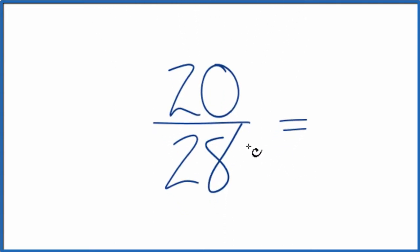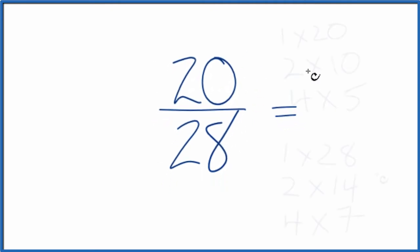To do that, we need to find a common factor, something that goes into 20 and 28. We want to find the greatest common factor, so let's list the factors for 20 and 28.